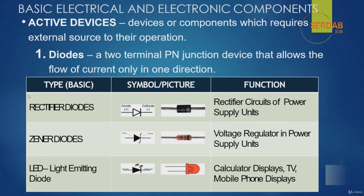Now let's talk about active devices. Active devices are components which require an external source for their operation. The first one in our list is the diode. A diode is a two-terminal PN junction device that allows the flow of current only in one direction. It may come in many shapes. It has a gray line indicating the negative terminal and the other end is the positive terminal. The positive terminal is called the anode and the negative terminal is called the cathode. This is called a rectifier diode.